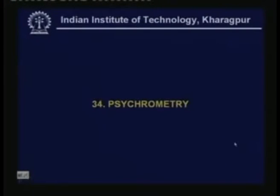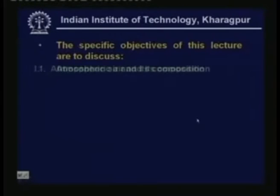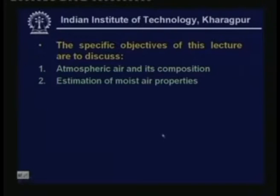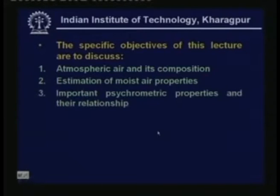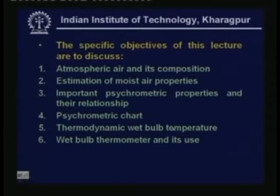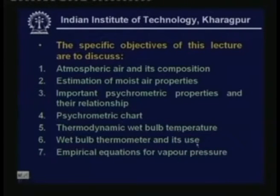The specific objectives of this particular lecture are to discuss atmospheric air and its composition, estimation of moisture properties, important psychrometric properties and their relationships, the psychrometric chart, thermodynamic wet bulb temperature, wet bulb thermometer and its use, and finally some empirical equations for vapor pressure.